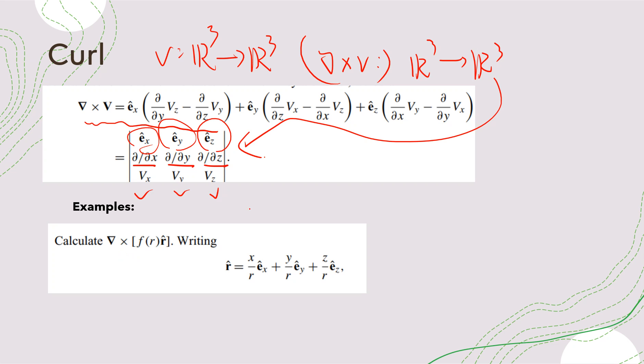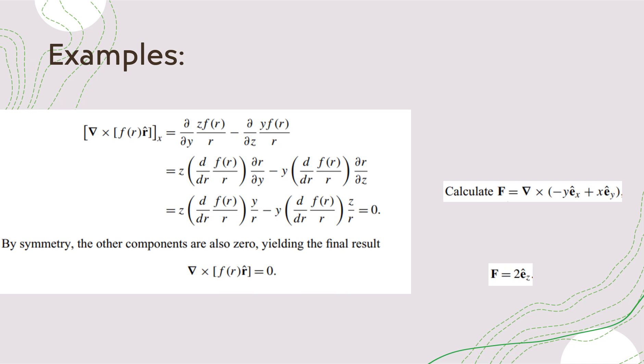Okay, so one example is we want to calculate the curl of the previous f of R r hat. So we can write R as this. Okay, so one calculation is very easy. It's basically just calculate the x component. So x component is this, right? So this is partial y, partial z, Vy, Vz, right? So x component is partial y Vz minus partial z Vy. So it's partial y of z f of R divided by R minus partial z of y f of R divided by R. And they use chain rules. So we can separate into two. And finally we find it's zero, right? So by symmetry, if x component is zero, then all of it is zero.